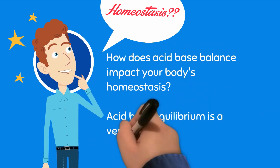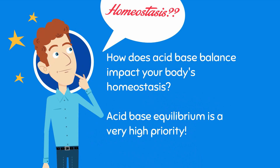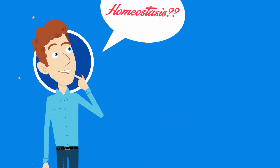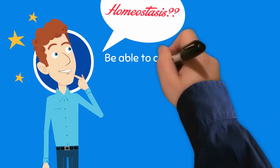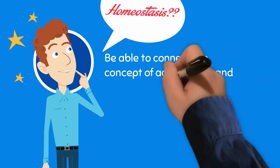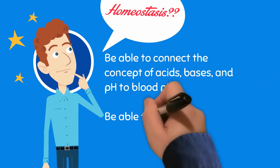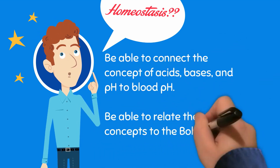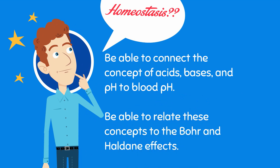Dealing with acids and bases is one of the highest priorities for the body since we can only survive in a very narrow range of pH. When we try to describe this range we refer to the pH scale and its importance in homeostasis in our bodies. This short video will try to apply the definitions of acids, bases, and pH to a scenario of when blood chemistry is altered in our body. It also will hopefully connect these concepts to the Bohr and Haldane effects that are explained in the next video in this series.